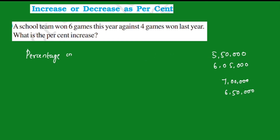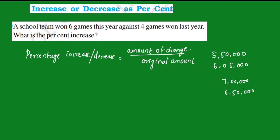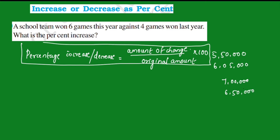Percentage increase or decrease: the equation is — Amount of change divided by Original amount, into 100. This is the formula for both percentage increase and percentage decrease.